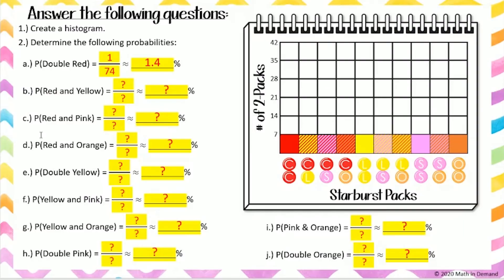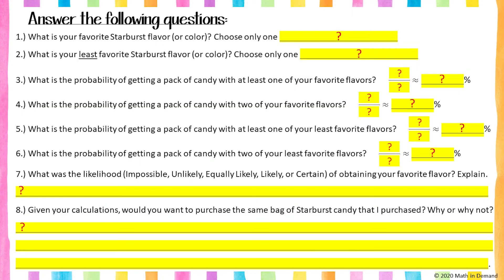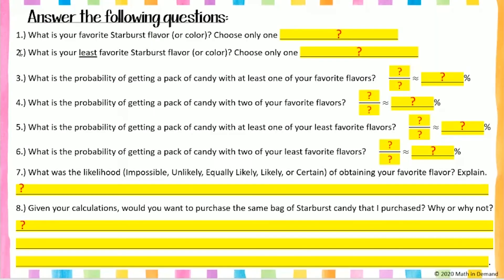You will continue with your calculations by solving problems 2b through 2j. After solving these problems, you will need to answer all the problems on the last page. I hope you enjoyed my video on determining the probability of getting your favorite flavor in a Starburst two-pack. Please make sure to subscribe and click that bell for notifications so you don't miss any other videos — I will see you later, bye!